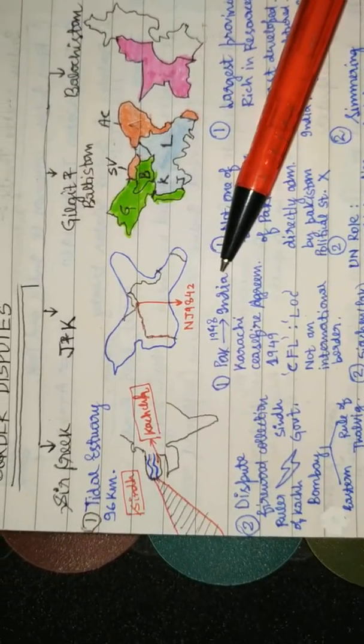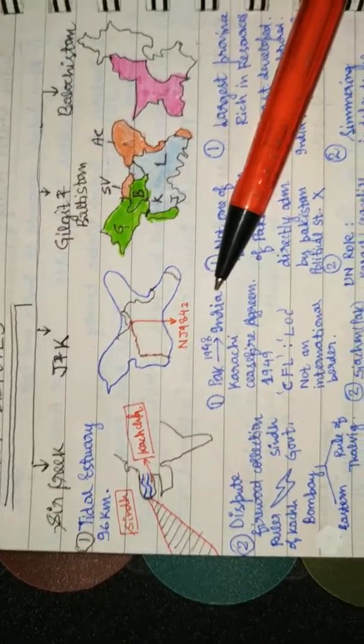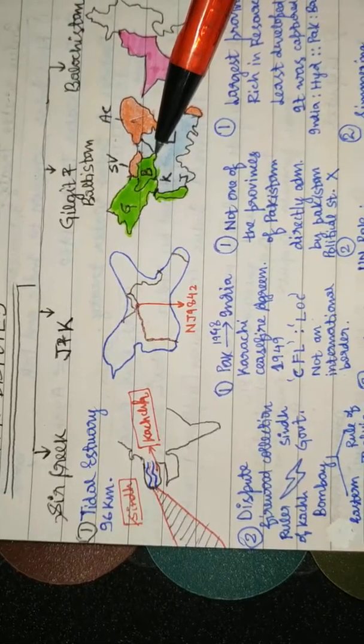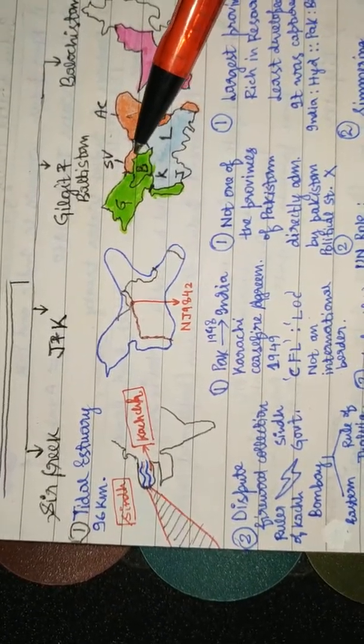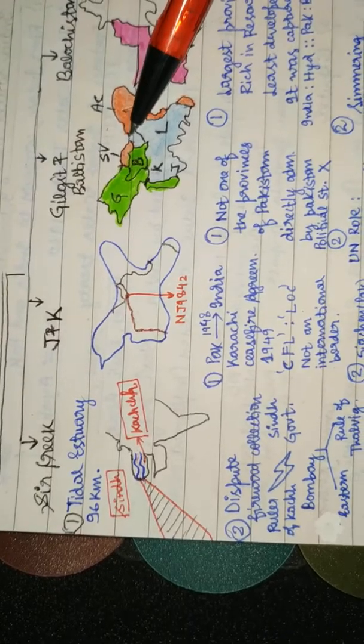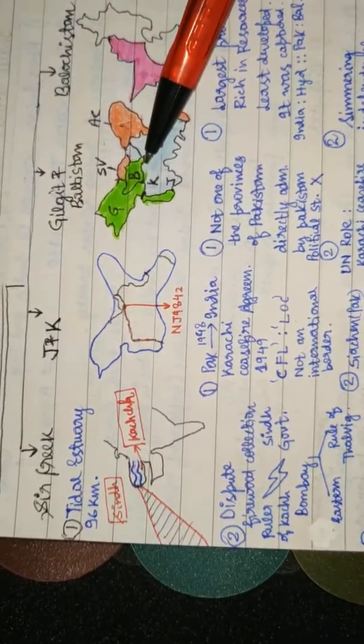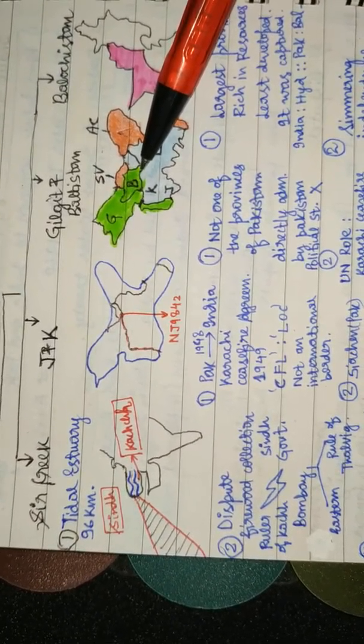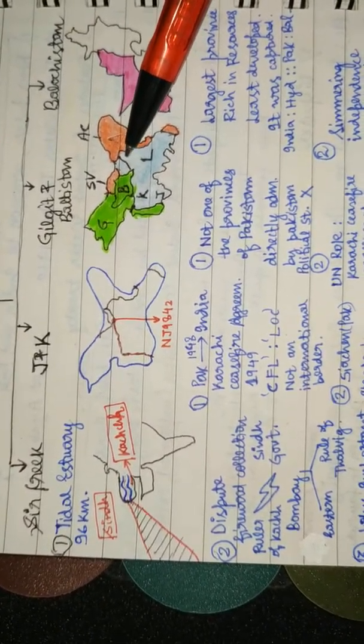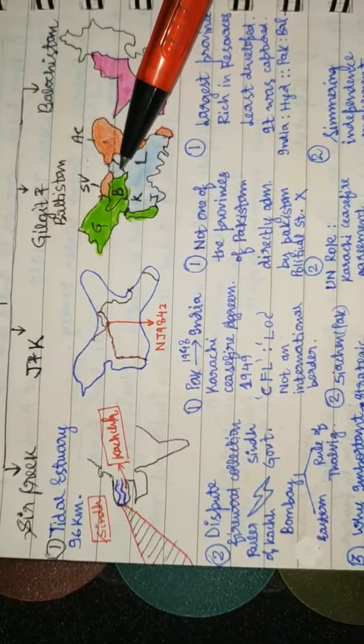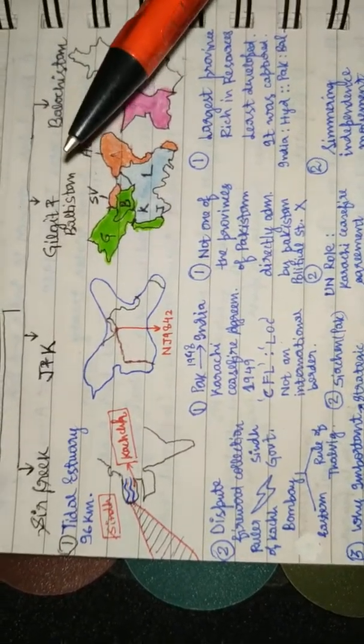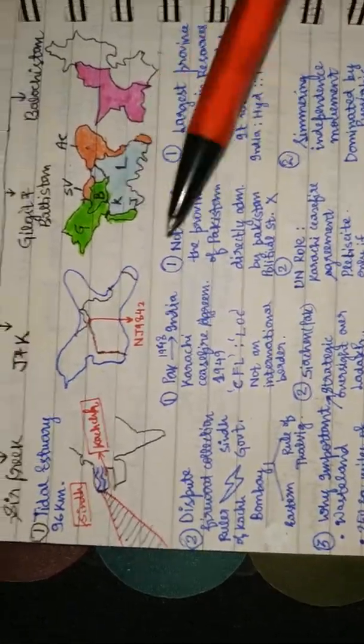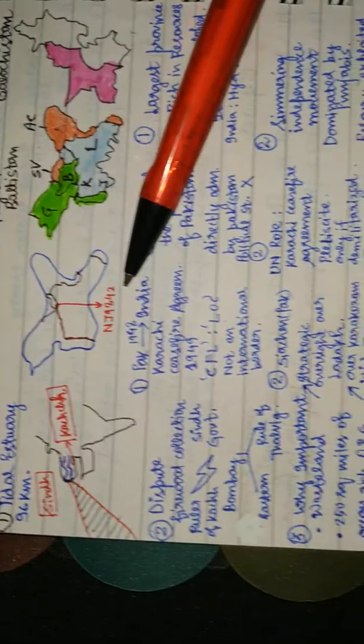India says that if this is NJ9842, thence north of NJ9842 is this direction, and hence the Siachen Glacier belongs to India. Pakistan says thence north to NJ9842 is the Karakoram Highway which goes to this direction, and hence Siachen Glacier belongs to Pakistan. This is the point of dispute.